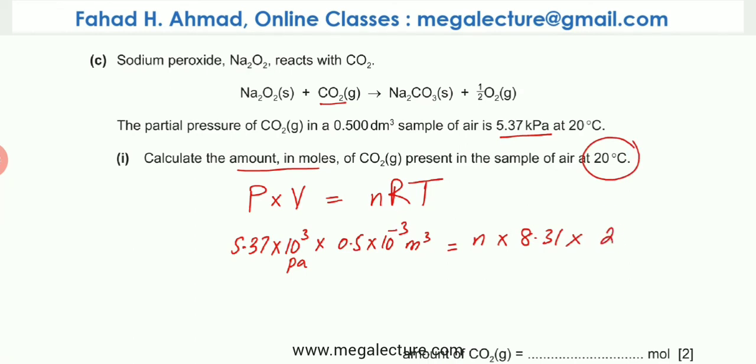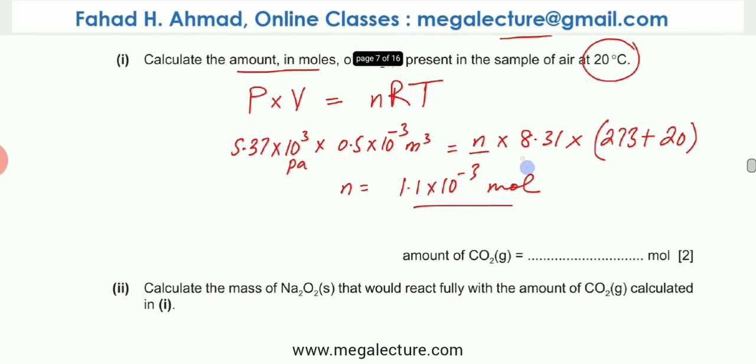R is 8.31 and the temperature that's given is 20 degrees centigrade but it should be in Kelvin, so it's going to be 273 + 20. We're going to make N the subject of the equation. If I make N the subject of the equation, N comes out to be 1.1 × 10⁻³ moles. That's the amount of moles of CO2.